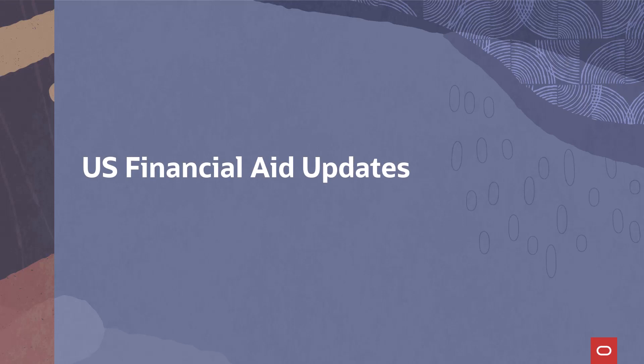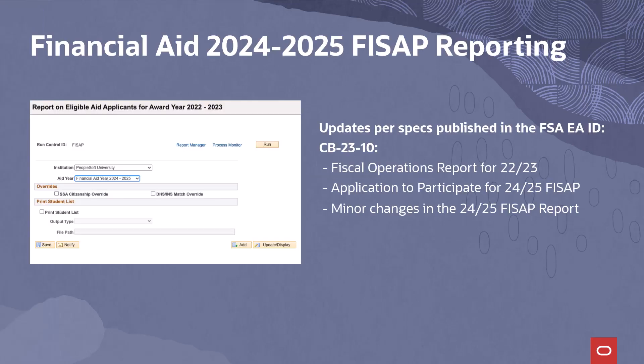The U.S. financial aid updates include 2024-2025 aid year updates for FISAP and 2024-2025 IMCloud INAS Connectivity Setup. The Fiscal Operations Report for award year 2022-2023, an application to participate for 2024-2025 FISAP, has been updated according to the specifications published in the Federal Student Aid Electronic Announcement on June 9, 2023. This update will allow institutions to produce the FISAP report that can be leveraged during the submission process in COD. Updates for the 2024-2025 FISAP report are cosmetic in nature — table formats and NA values have been delivered in applicable fields where they were left blank in prior award year reporting.